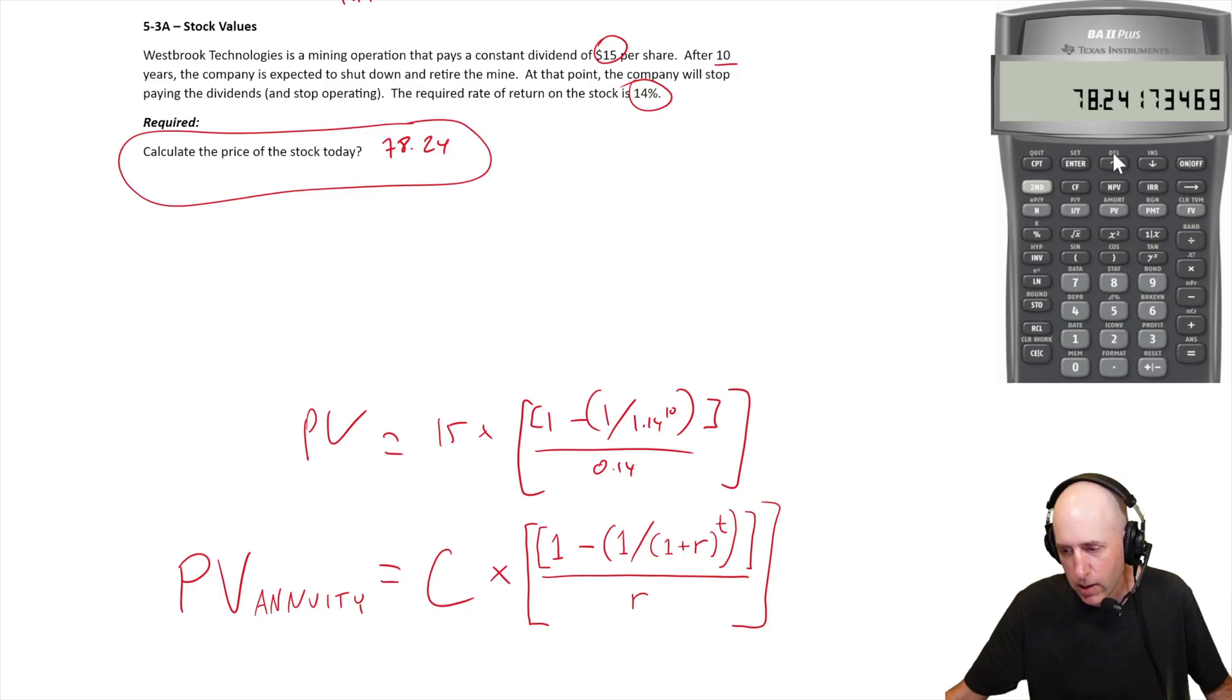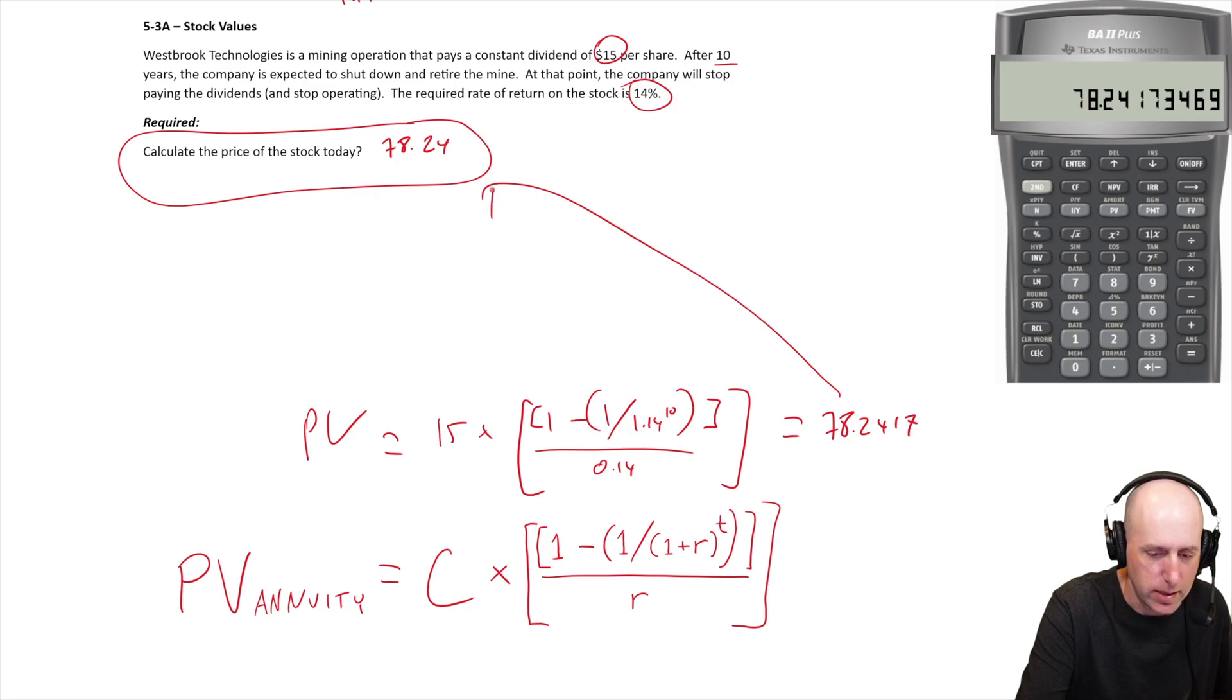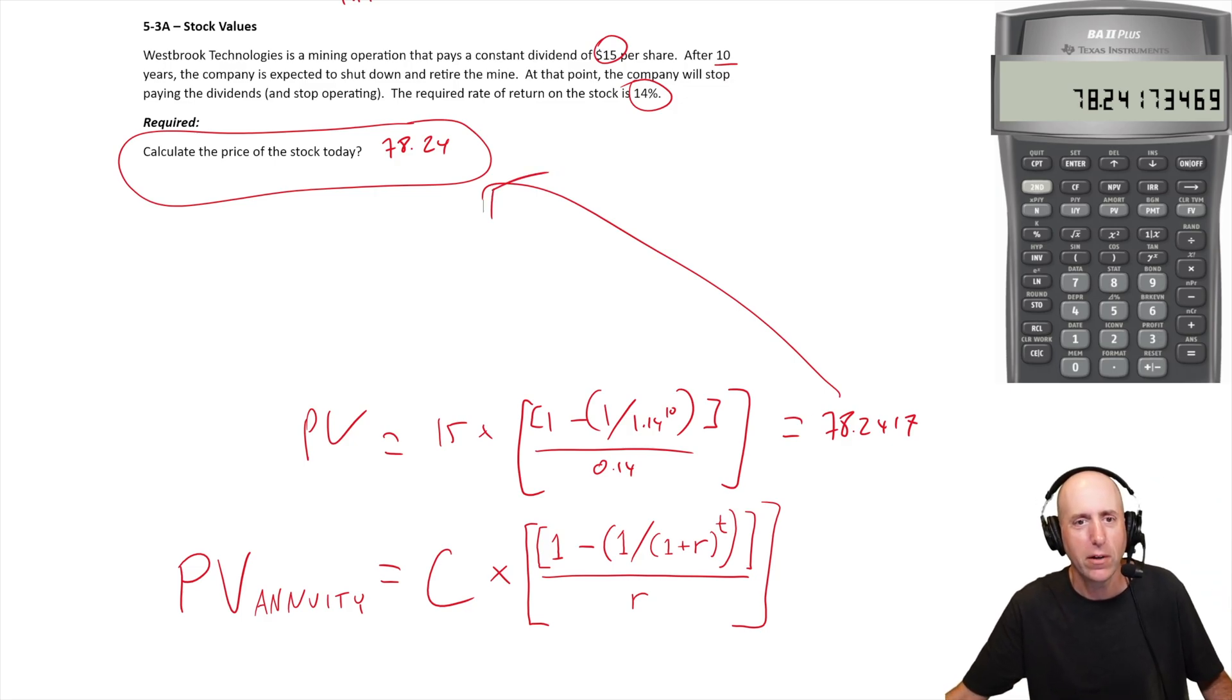And because I haven't rounded, I get the exact same answer: 78.2417. If you look back in the video it's going to be 78.2417, and you can see that does indeed match my answer. So we've solved it twice.